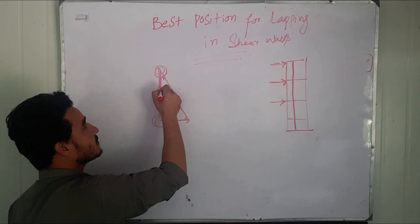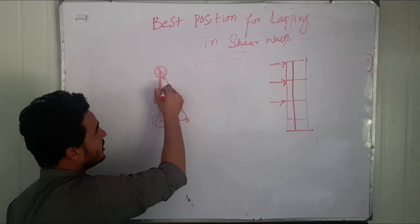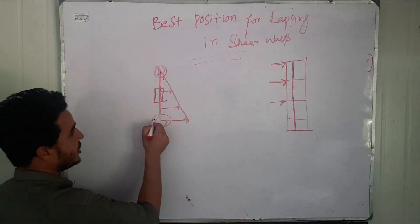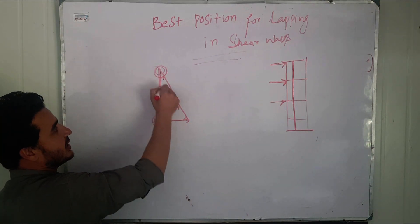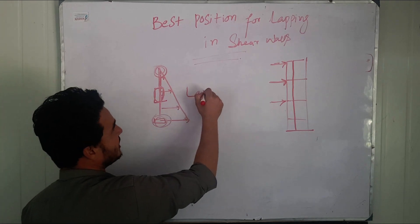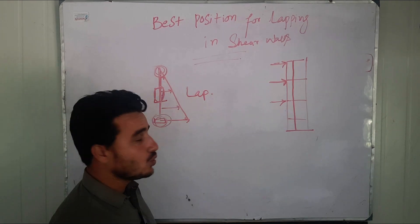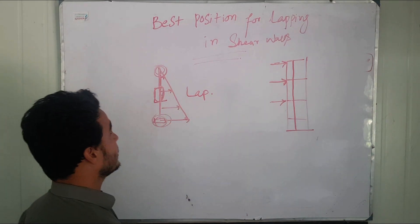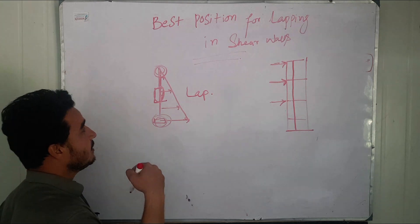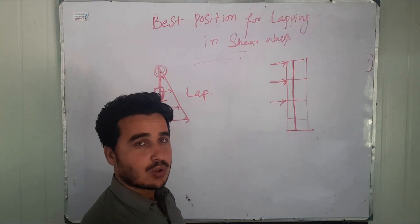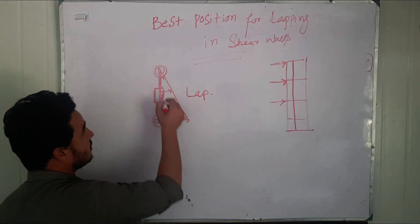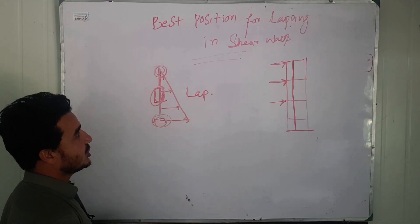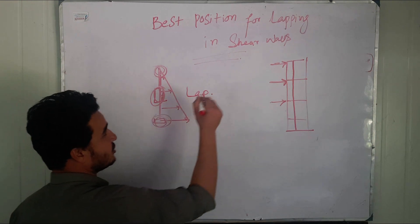Here it will face maximum bending moment, and here it will face maximum shear. We can say that the region in the middle, where the wall faces middle shear and middle moment, is where we will provide the lap. Because a lap is ultimately a weak point, that weak point should be placed where the structure is not facing either maximum bending moment or maximum shear. This middle zone is the best position for lapping in a shear wall.